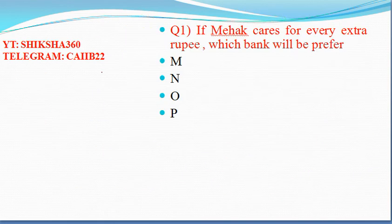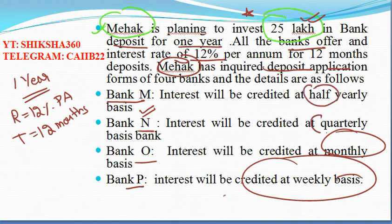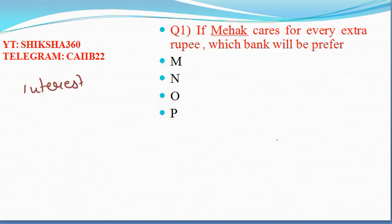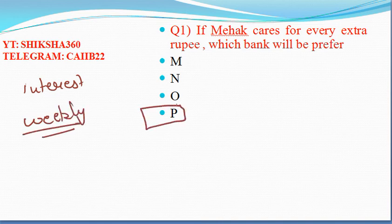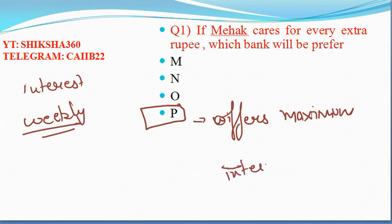The first question asks: if Mahek cares about every extra rupee, which bank will give her the maximum interest? Among the four banks, interest is calculated on a half-yearly basis for M, quarterly for N, monthly for O, and weekly for P. As we have discussed in the session, weekly compounding among the four gives the maximum interest. So Bank P will be preferred by Mahek, as it offers the maximum interest on investment.